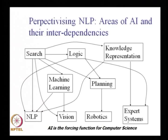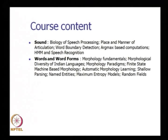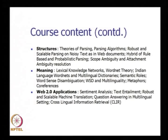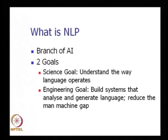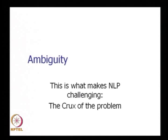The course will cover sound — that means speech processing — word and word forms, morphological processing, structures which means syntactic processing and parsing, meaning representation which means semantics, and web 2.0 applications. Natural language processing was defined as a branch of artificial intelligence with two goals: the science goal is to understand how language operates, and the engineering goal is to build systems that analyze and generate language. Ambiguity is the crux of the problem in natural language processing, and resolving ambiguity is the main concern of language processing.